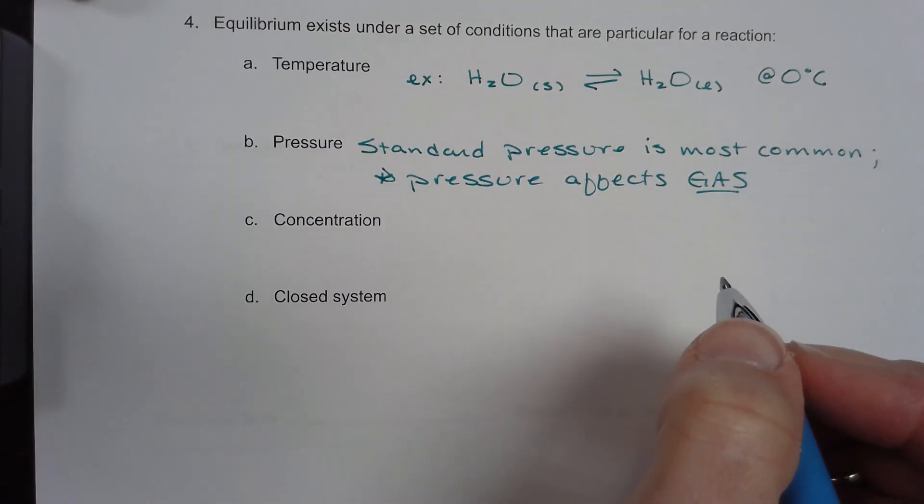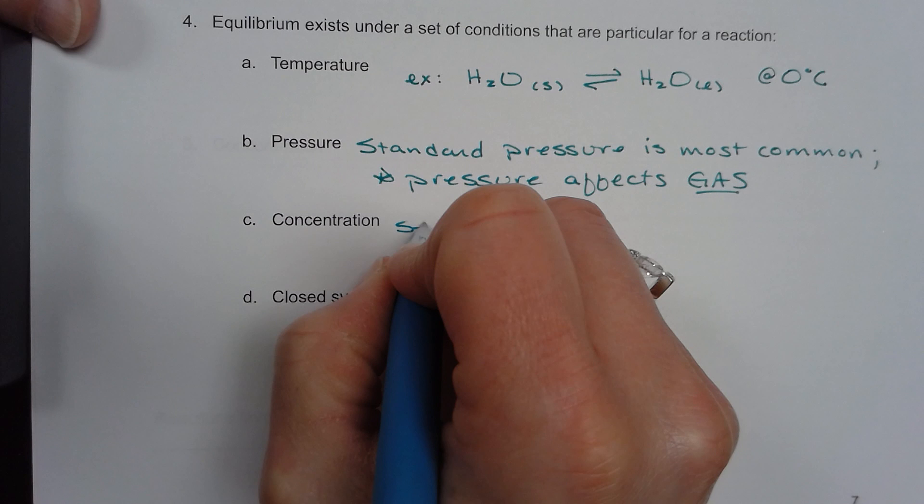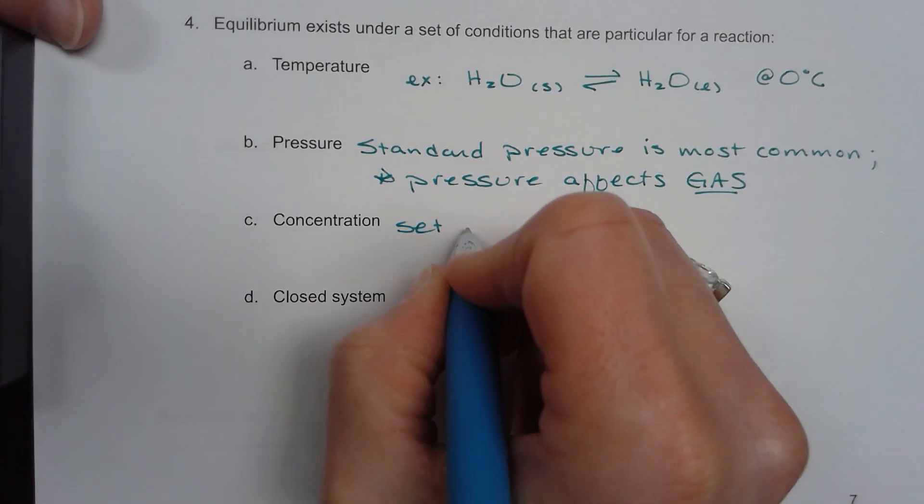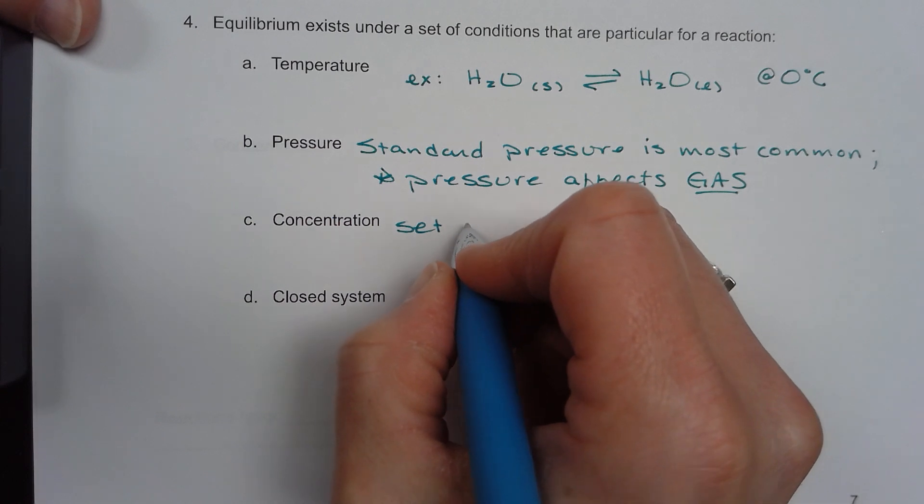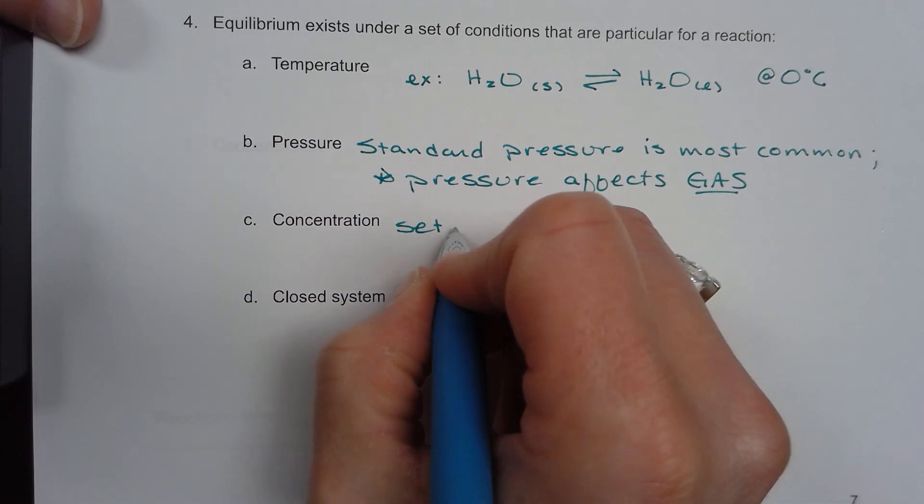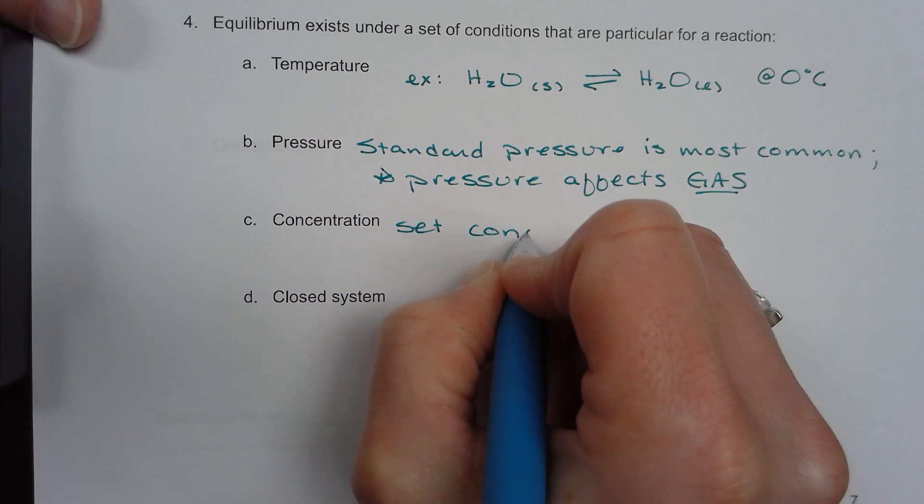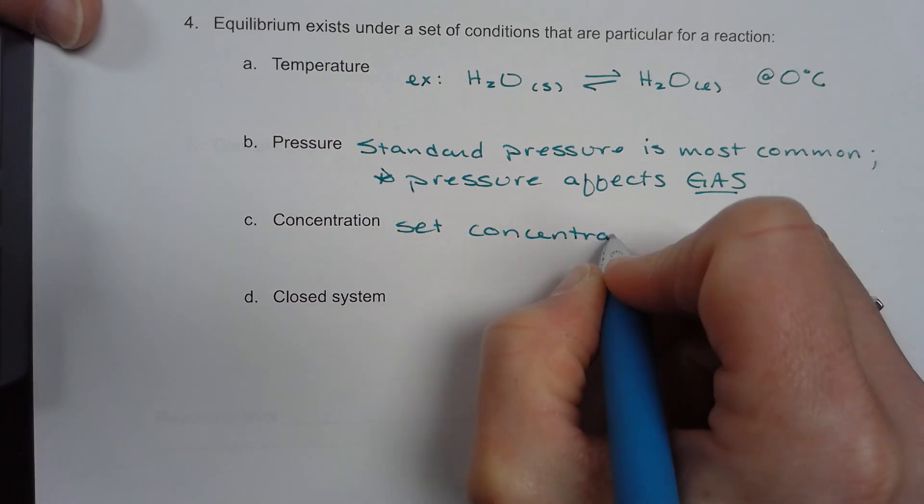So we're going to have a concentration. Set concentration. There's a set concentration. We're not changing it throughout the reaction, unless we want to put a stress on the system. Equilibrium is going to happen all on its own when we have set concentration.